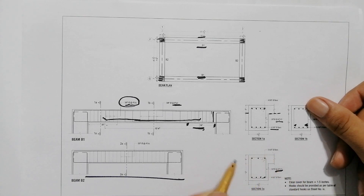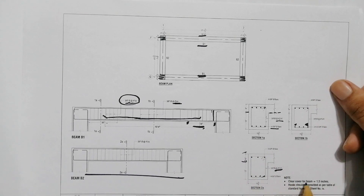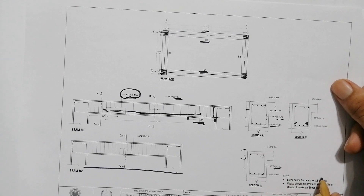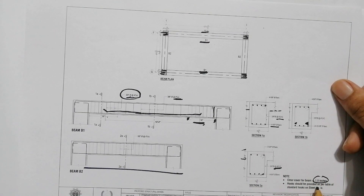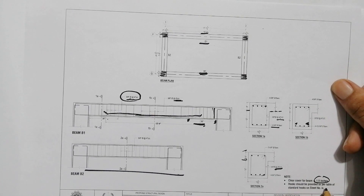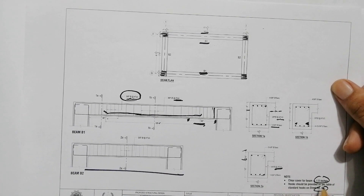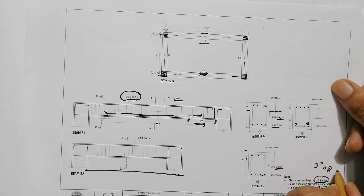The diameter is the same, and this is the thickness of the slab. Note: the clear cover of the beam should be 1.5 inches. Hooks should be provided as per the table of standard hooks, but the hook length should not be less than 3 inches, and the bend angle should not be less than 90 degrees.